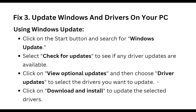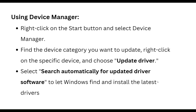Our third step is to update Windows and drivers. Using Windows Update, click on the Start button and search for Windows Update. Select 'Check for Updates' to see if any driver updates are available. Click on 'View Optional Updates' and choose driver updates to select the drivers you want to update, then click 'Download and Install'. Alternatively, using Device Manager, right-click the Start button, select Device Manager, find the device category, right-click the specific device, choose 'Update Driver', and select 'Search automatically for updated driver software' to let Windows find and install the latest driver.